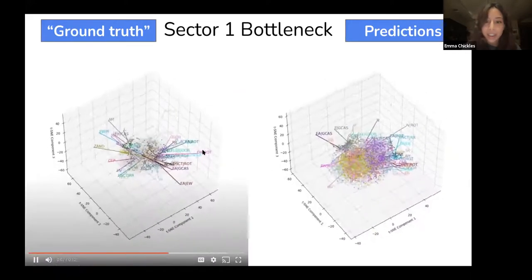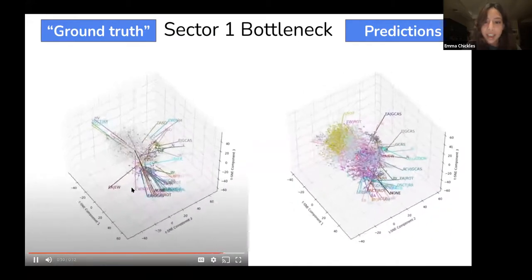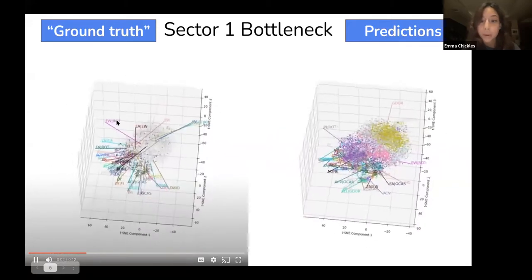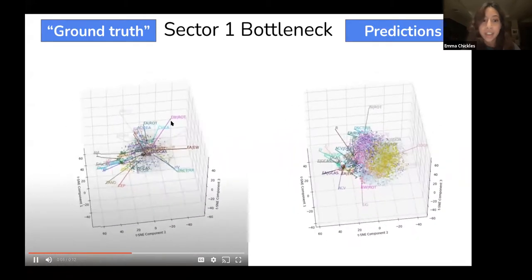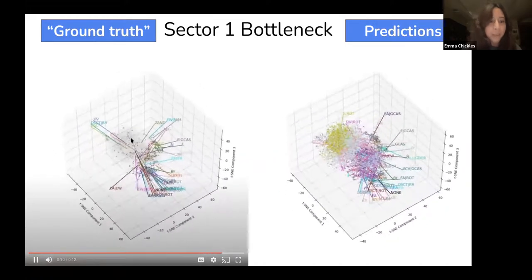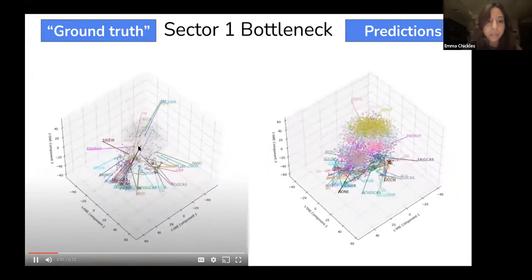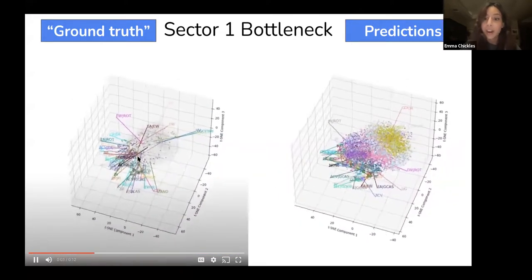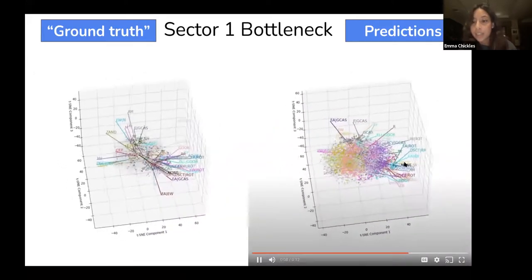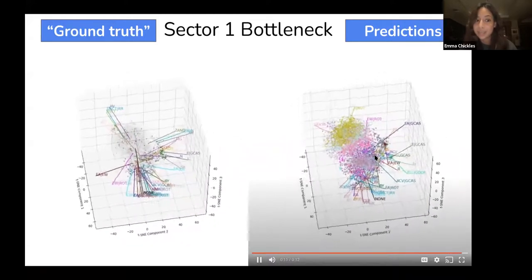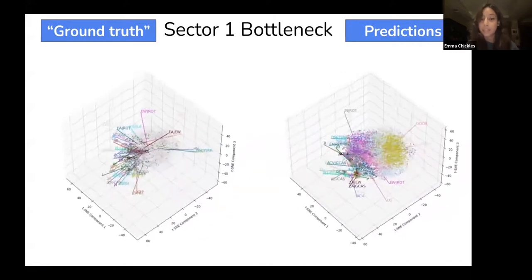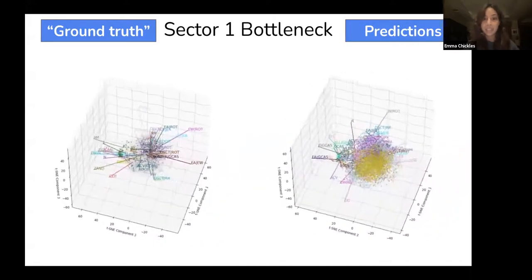Consider the bright pink label on the t-SNE representing EW+rot — a low-mass contact binary with rotational modulation — which lies in the middle of the feature space surrounded by unclassified stars shown in black. Our clustering algorithm found a cluster in that region, visible as the bright pink cluster on the right t-SNE. These t-SNE plots show how unsupervised machine learning views TESS data, which I believe we can learn a great deal from.